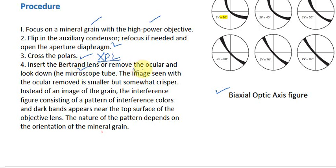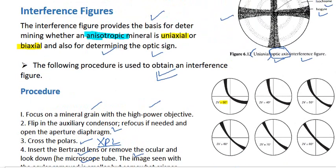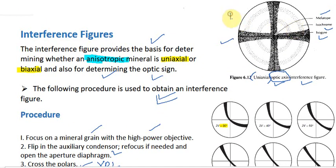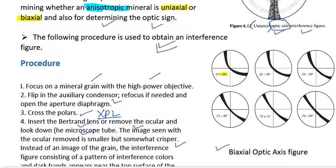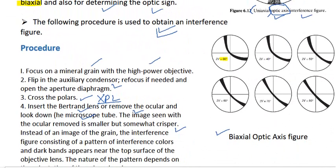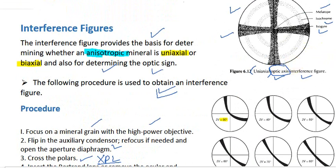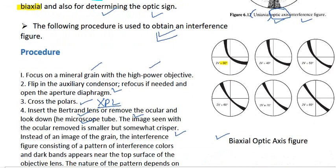Alternatively, remove the ocular and look down the microscope tube. The image seen with the ocular removed is smaller but somewhat crisper. Instead of an image of the grain, the interference figure — consisting of a pattern of interference colors and dark bands — appears near the top surface of the objective lens.